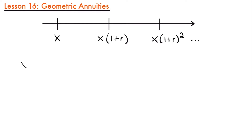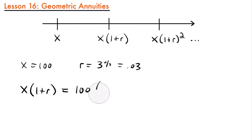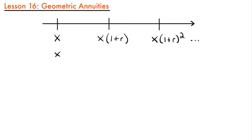For example, if you started out making a payment of $100 and were going to increase it by 3% every payment period, that decimal would be 0.03. Your next payment would be x times (1 + r), which equals 100 times 1.03, giving $103 — 3% of $100 is $3. The next payment takes 3% of $103 and adds that, so it continually increases. On the timeline, the next payment is x times 1.03, then x times 1.03 squared, and so on.